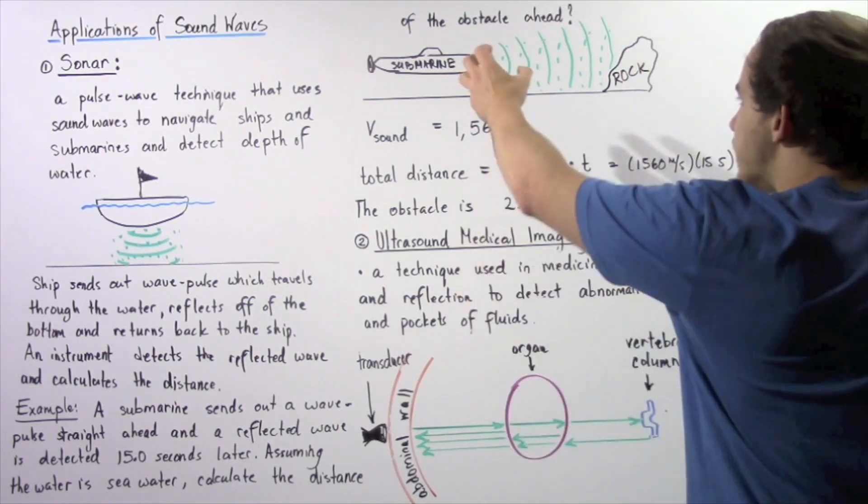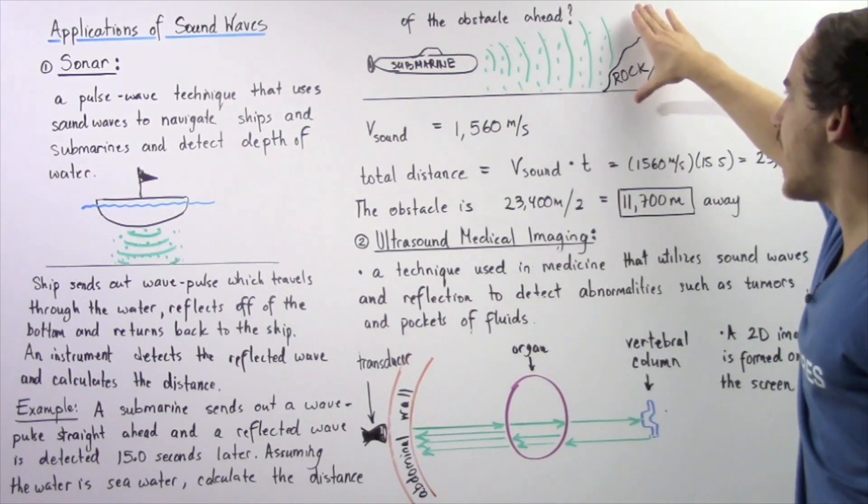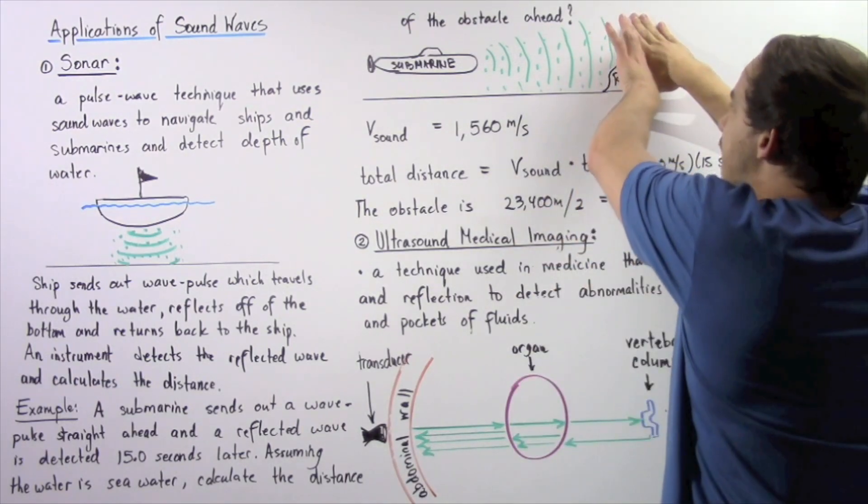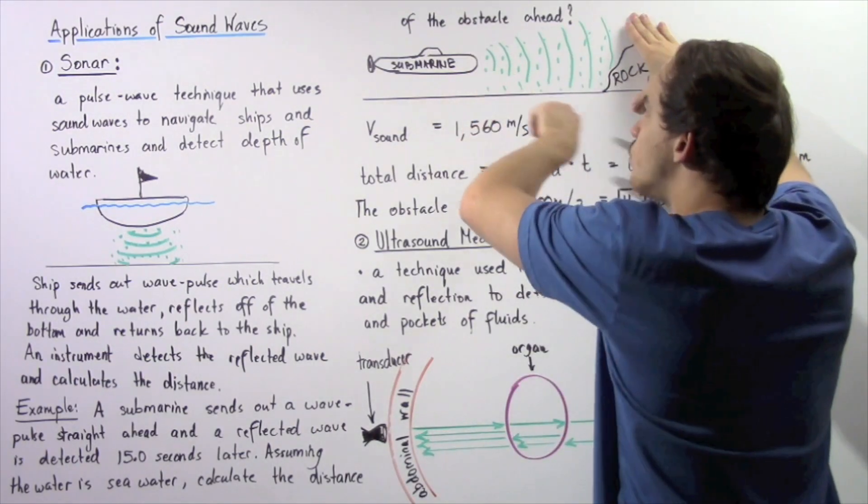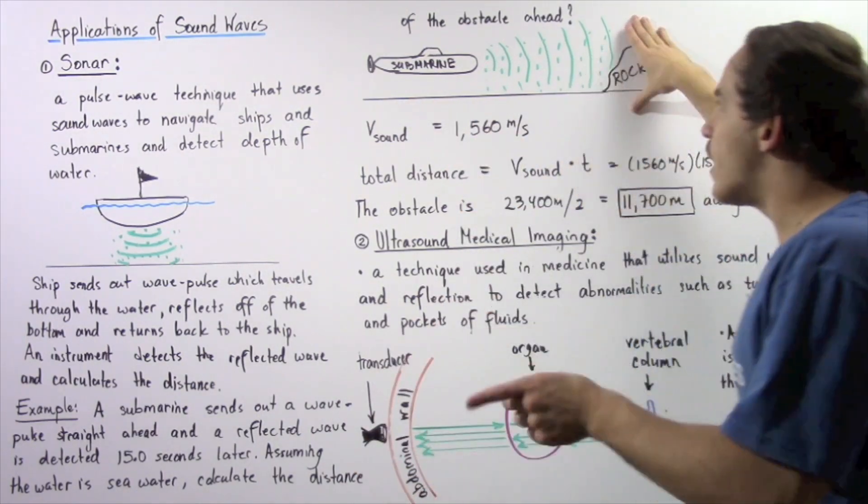So we have the submarine creating a pulse wave that travels through the water. Eventually, if there's an obstacle ahead, some of that wave will reflect back and return to the submarine, and the submarine will be able to detect it.